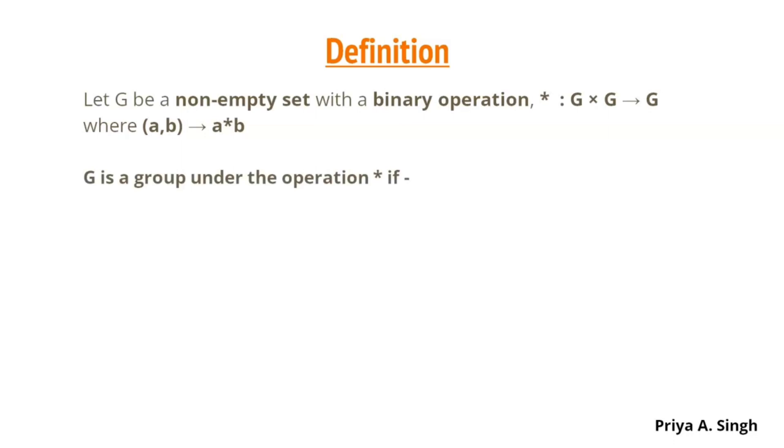For a set G to be a group under the operation star, the following properties must be satisfied. The first property is the closure property. For any two elements in G, if A star B also belongs in G, then we can say that the set G is closed under the operation star.